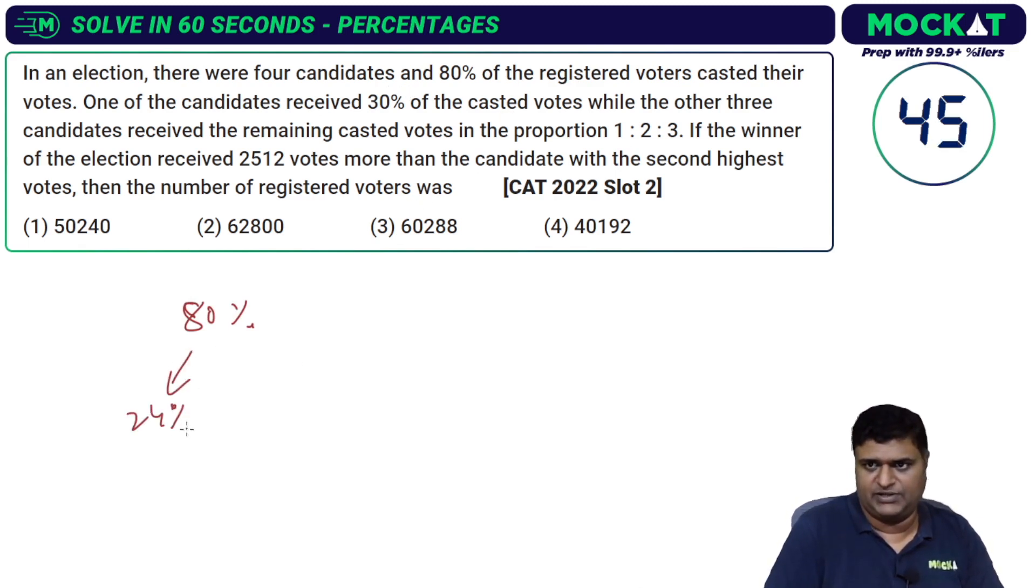30 percent of the casted votes - that's 24 percent - went to one of the candidates, while the other three candidates received the remaining 56 percent of the total registered voters, and that is getting split in the ratio 1:2:3.